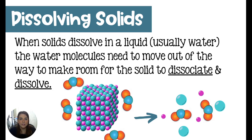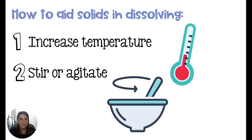In order for this to happen, the ions in the crystal will have to break apart, which we call dissociation. In something covalent, they do not dissociate, but they still find their way in between water molecules to dissolve.